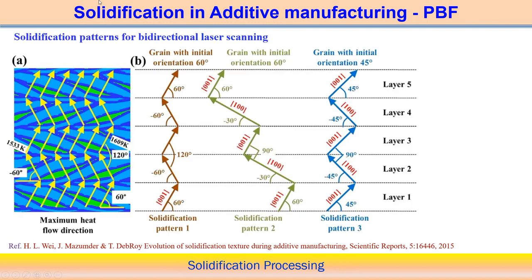Observing bidirectional scanning also, the solidification pattern shows how the maximum heat flow direction is changing — it is around 60 degrees. With respect to the other side, it should also be 60 degrees, because in bidirectional scanning one direction then the other direction is followed alternately.